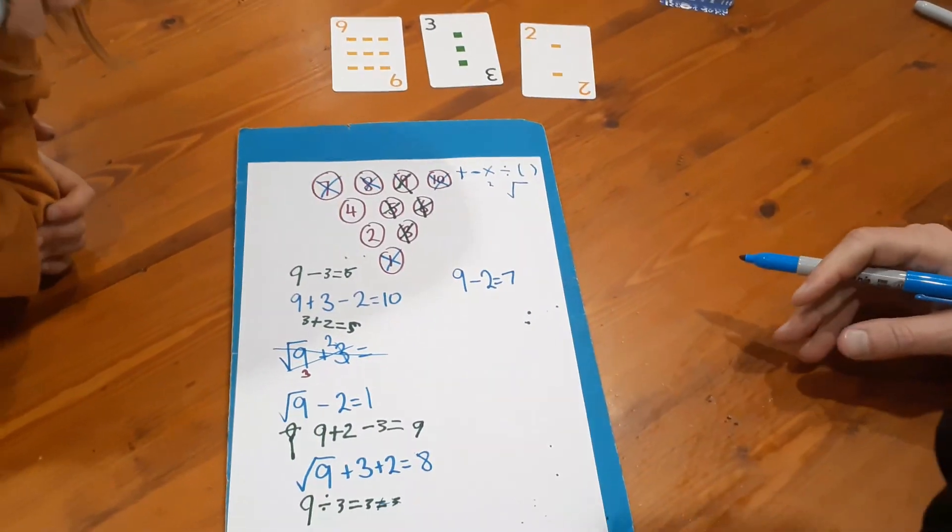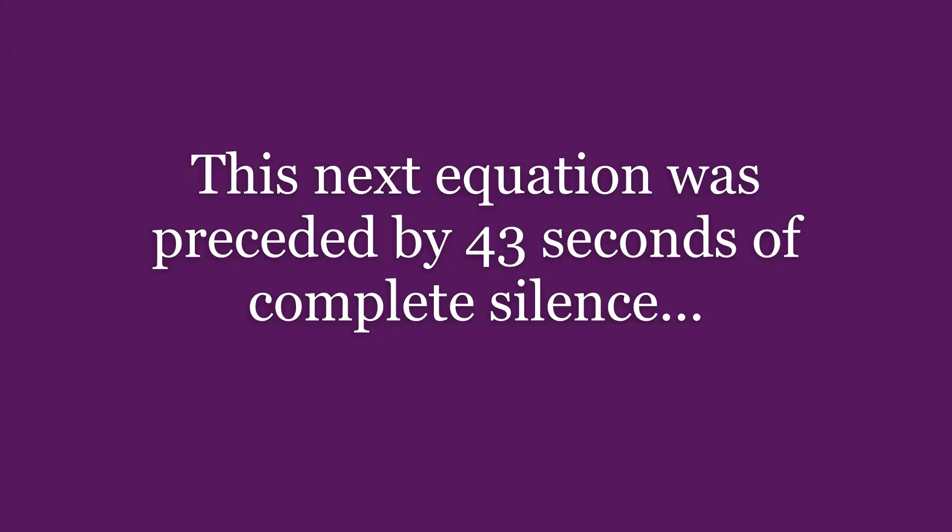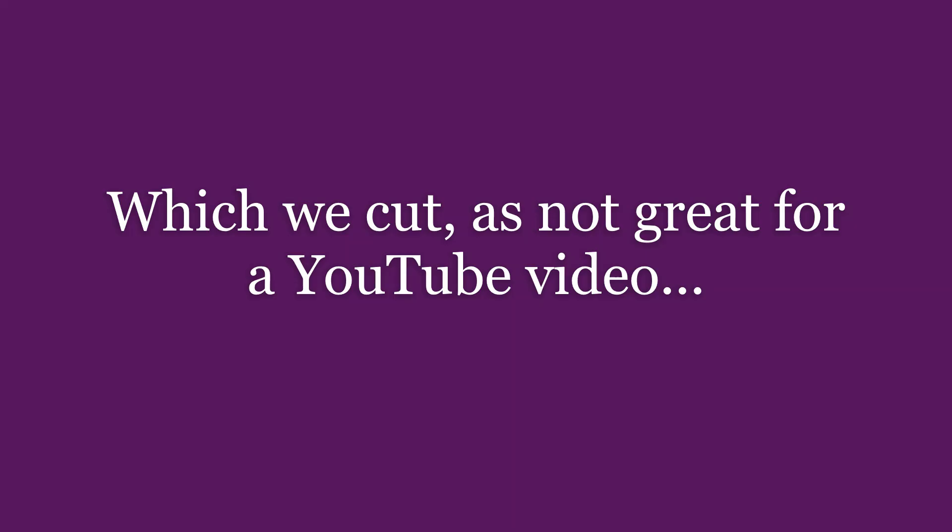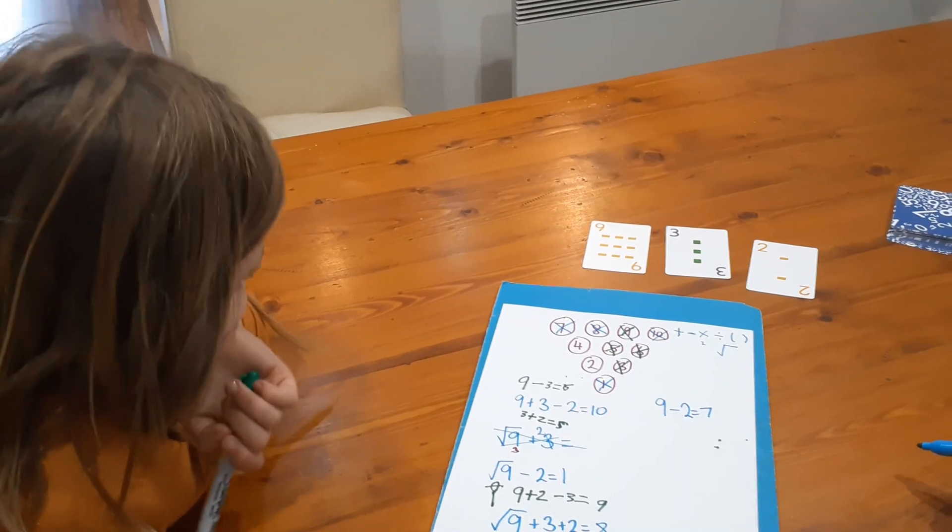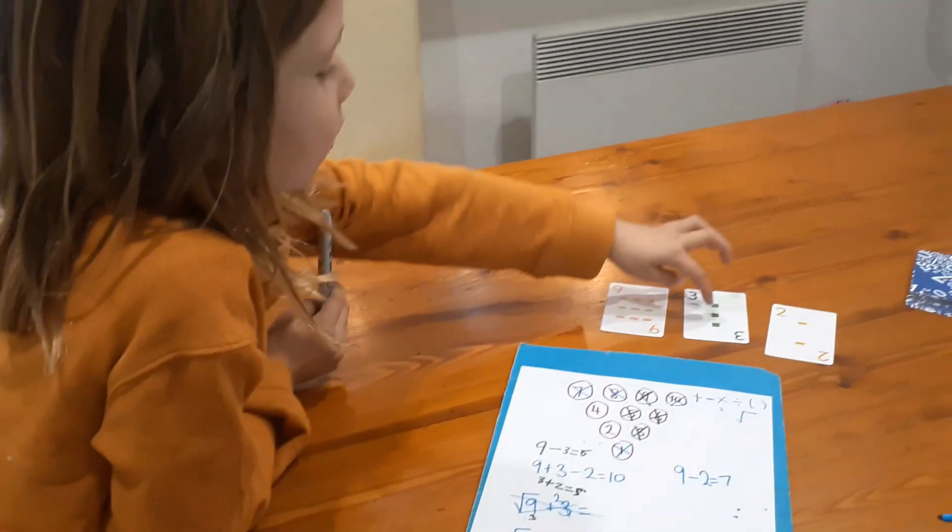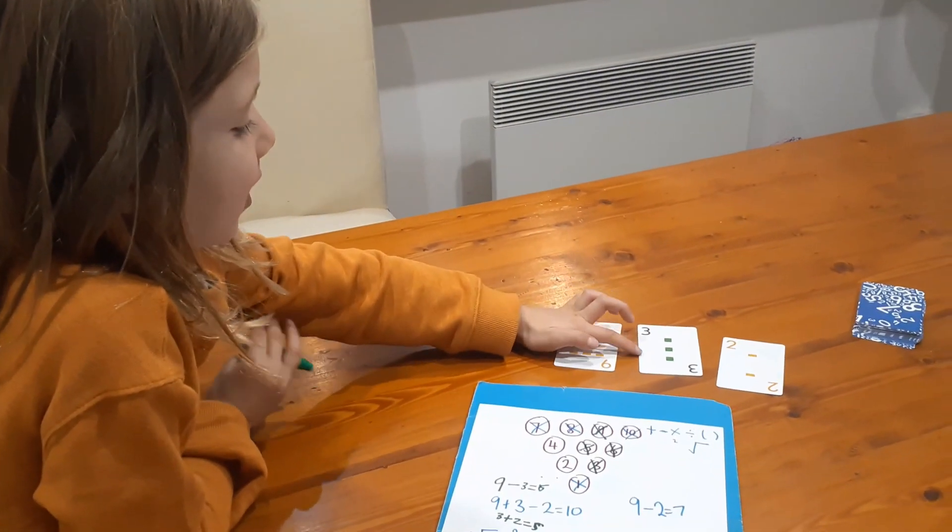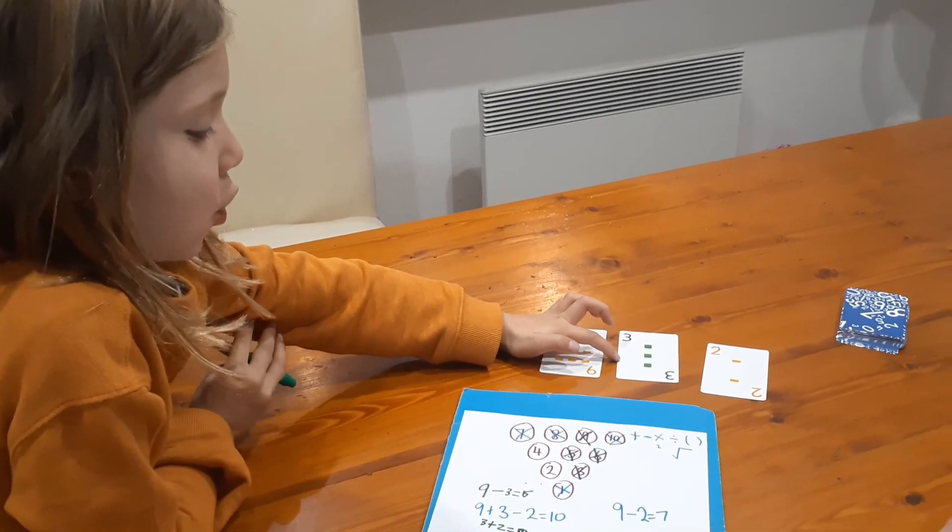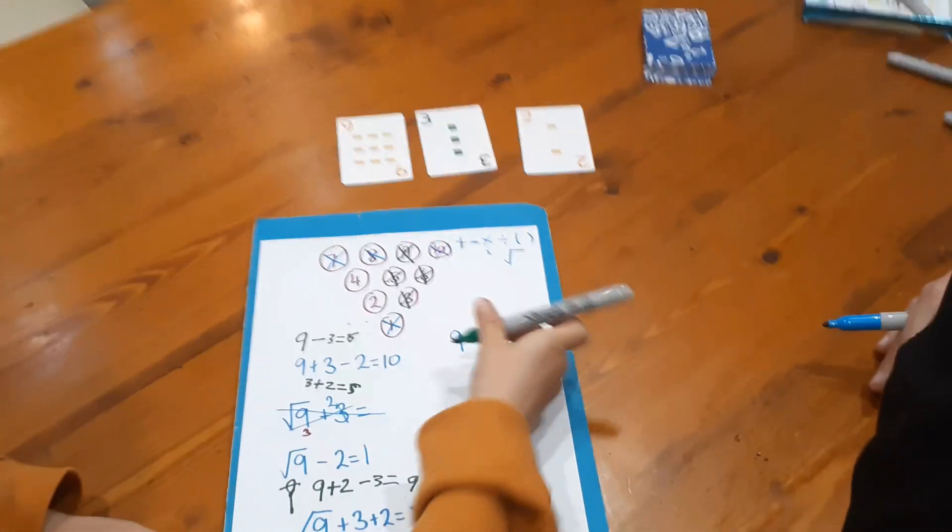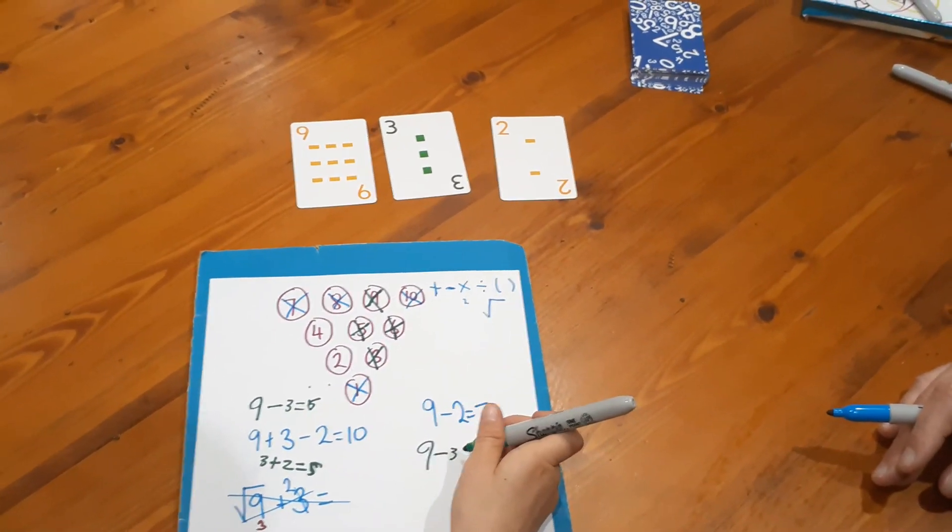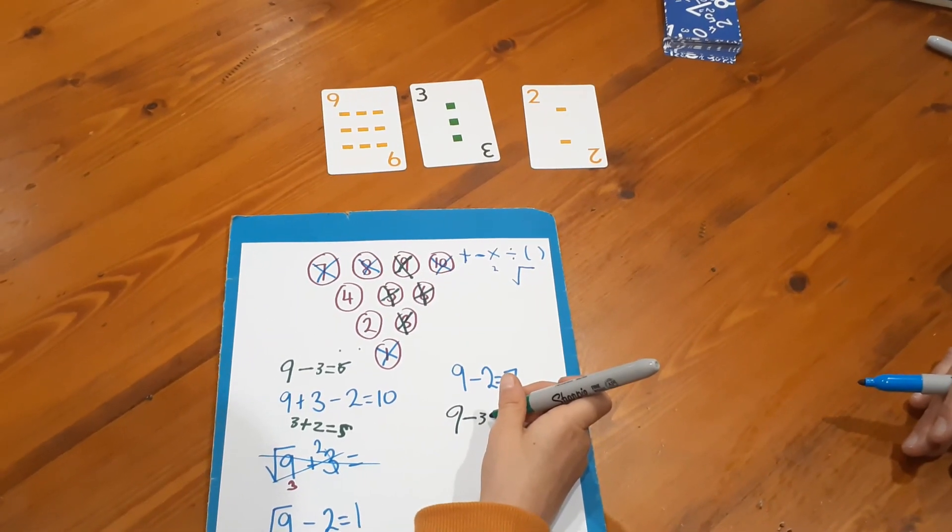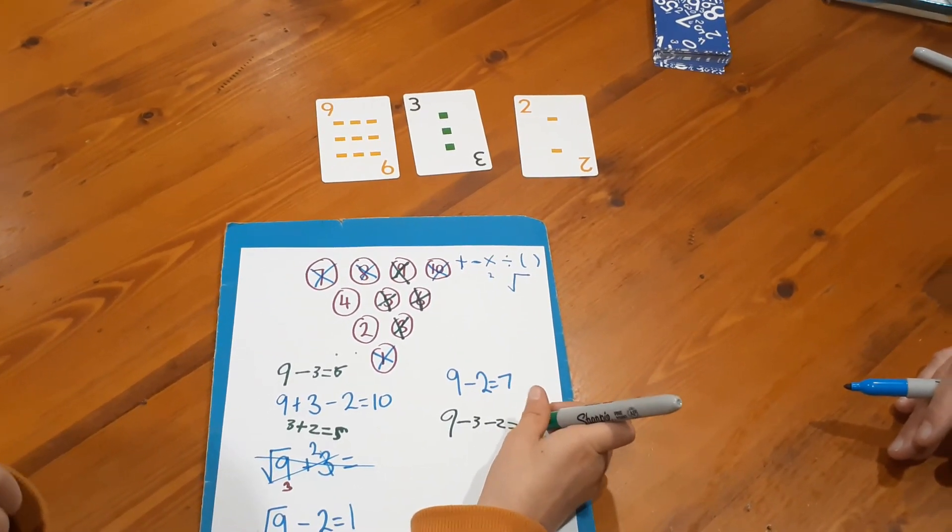So we need four and two, Nash. Can we do nine take away three, six take away two? Fantastic! Write it down. Nine take away three, take away two equals.